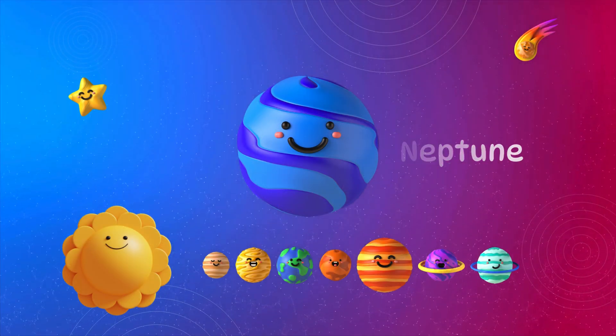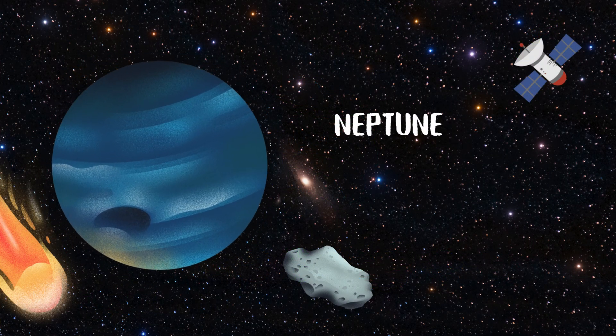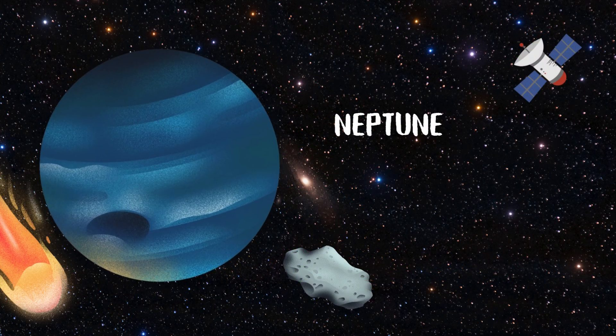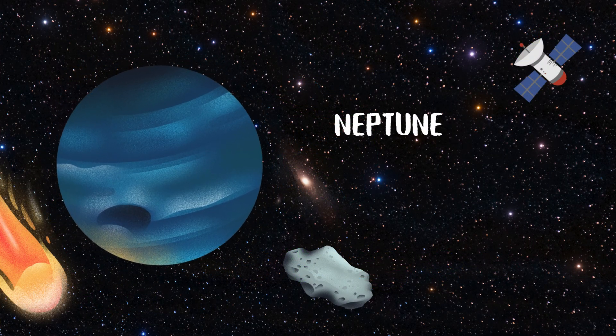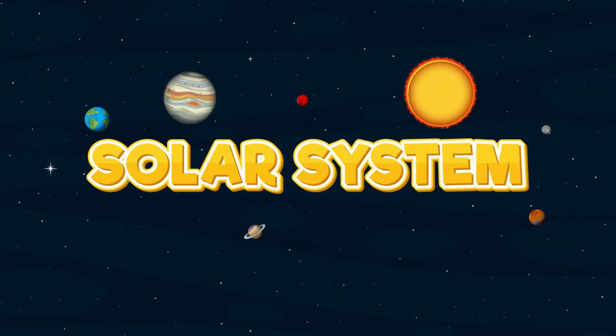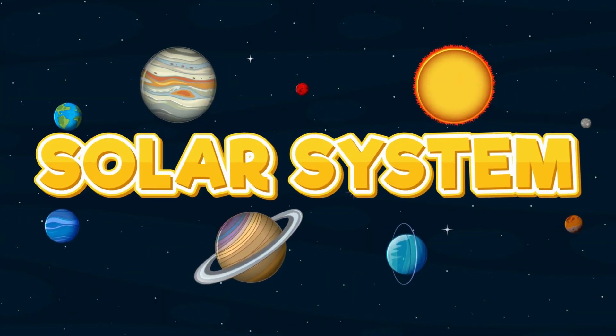Neptune's blue and far away, storms and winds that swirl all day. Round and round we go in space, the solar system's a magic place.